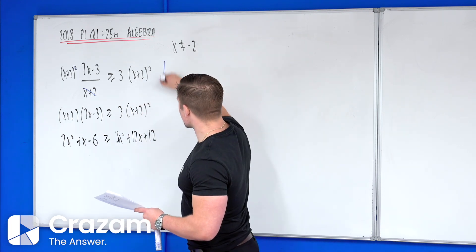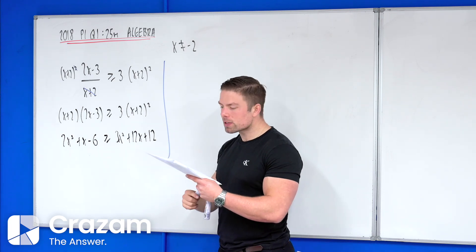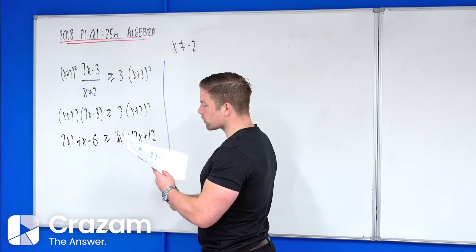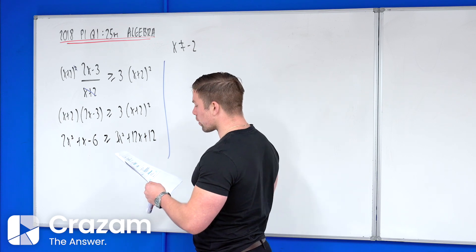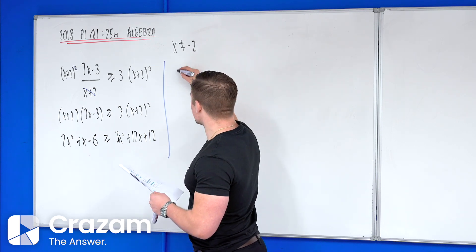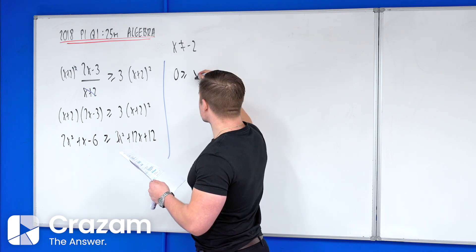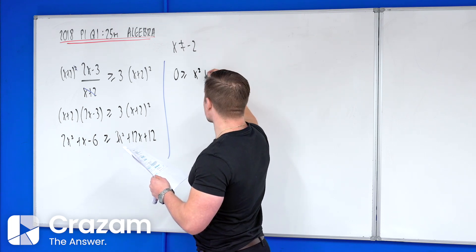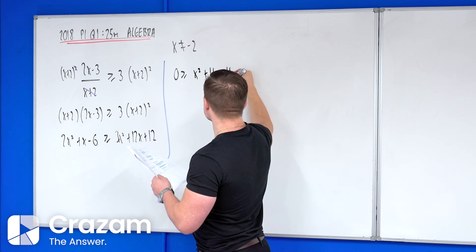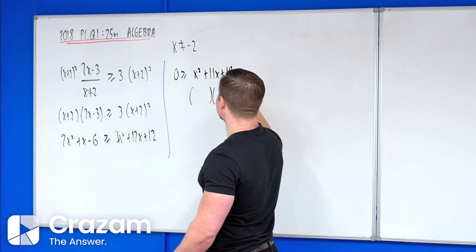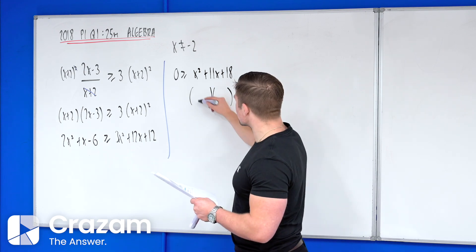What we're going to do now is bring everything over to one side of the equal sign and it turns into a nice enough quadratic for us. So we have 0 is greater than or equal to x squared plus 11x plus 18. And if we solve that exactly like a normal quadratic, that gets us first of all our factors of x plus 2 and x plus 9.